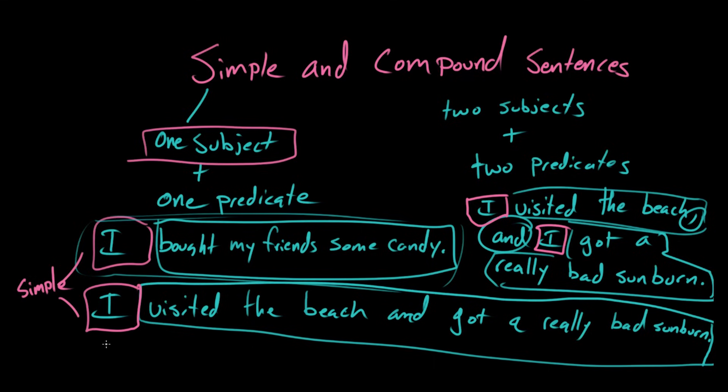And even if I'd written, Paige and I visited the beach and got a really bad sunburn, that would still be a compound subject but it wouldn't be two sentences squished together. It would be one kind of long sentence. Right. You can have a compound subject or a compound predicate but that doesn't make it a compound sentence. What makes it a compound sentence is you have two parts that can stand on their own as individual sentences and they're sort of being put together.